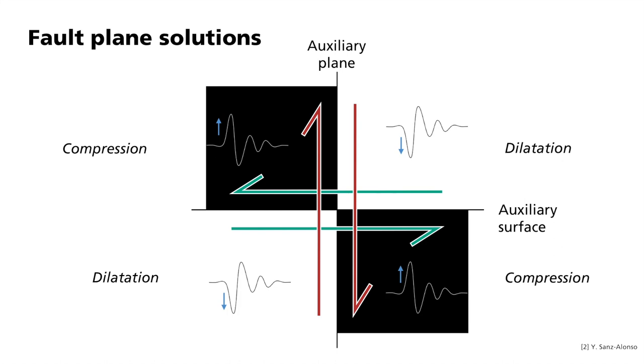Orthogonally to the rupture plane is an auxiliary plane, which separates the areas from each other. The position of this second imaginary plane depends directly on the direction of slip. Both surfaces are called nodal planes.